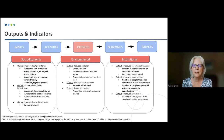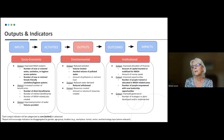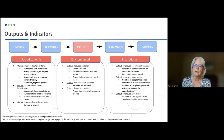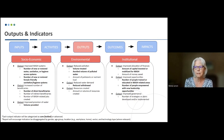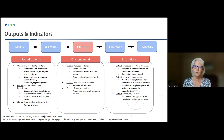There's also a category of institutional outputs, including things like improved allocation of finances, improved opportunities, and improved governance. The report encourages that these indicators be disaggregated by gender, age group, location — for example workplace or home — sector, and technology type where relevant.